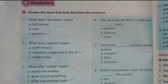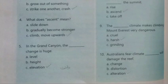What does 'ascent' mean? Ascent کا مطلب ہے climb — اوپر چڑھنا، move upwards — اوپر کی طرف حرکت کرنا۔ In the Grand Canyon, the elevation change is huge — elevation یعنی بلندی والی تبدیلی۔